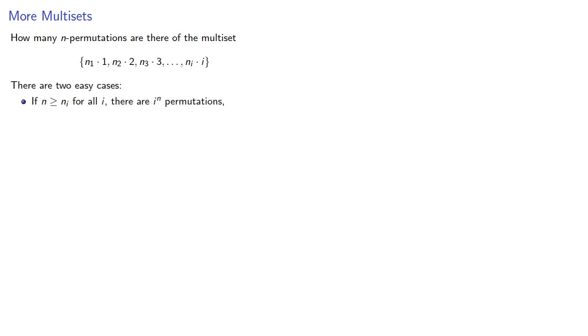If n is greater than or equal to any of the ni, there are i to the n permutations, and if n is exactly equal to the sum of the ni, then there are multinomial coefficient permutations.